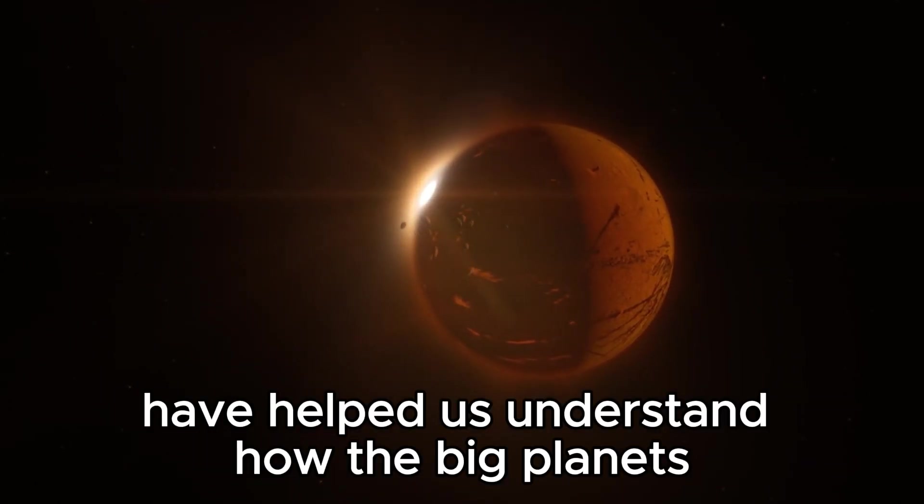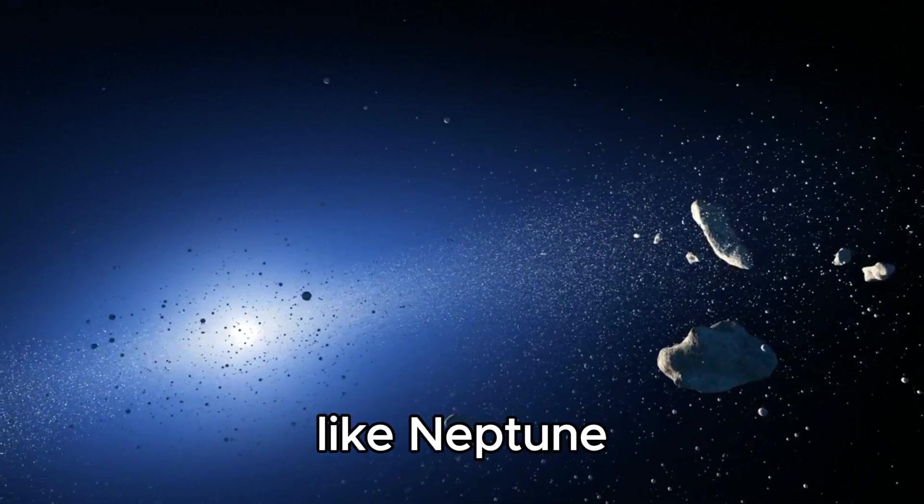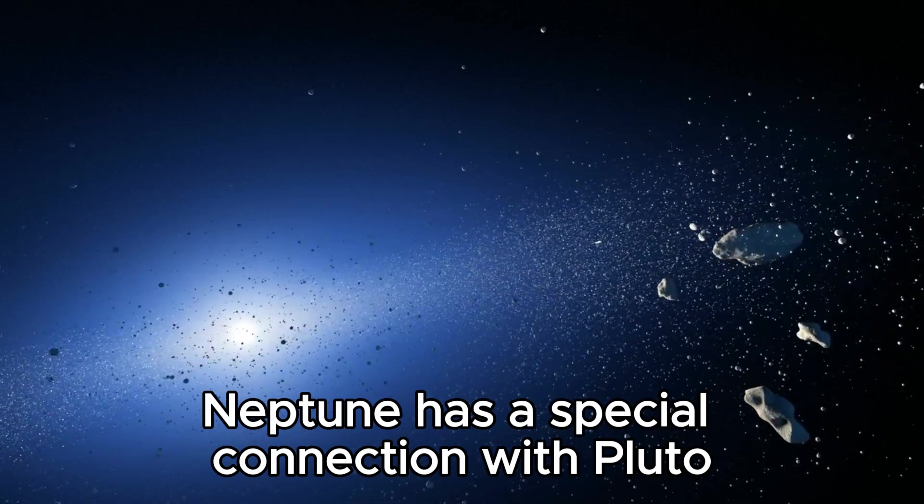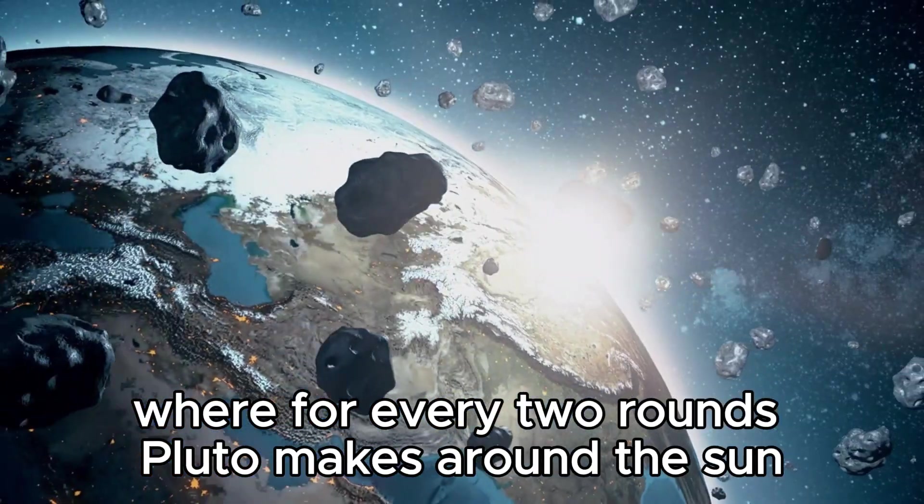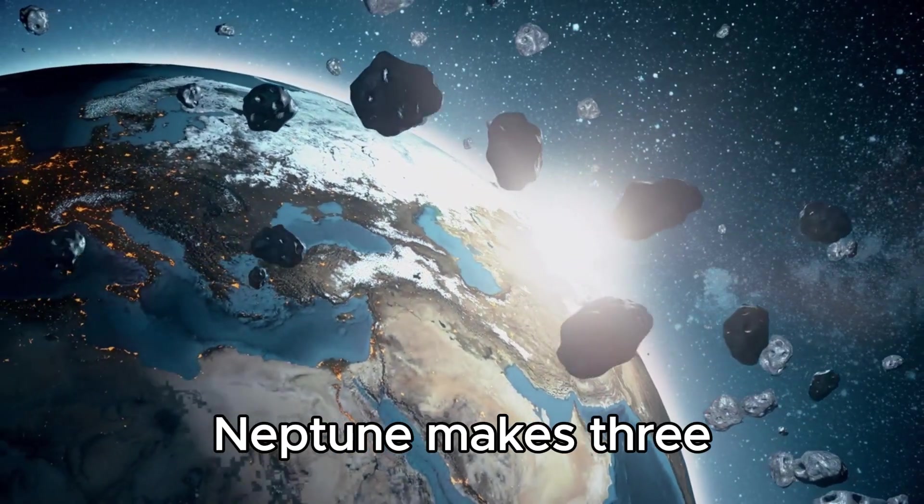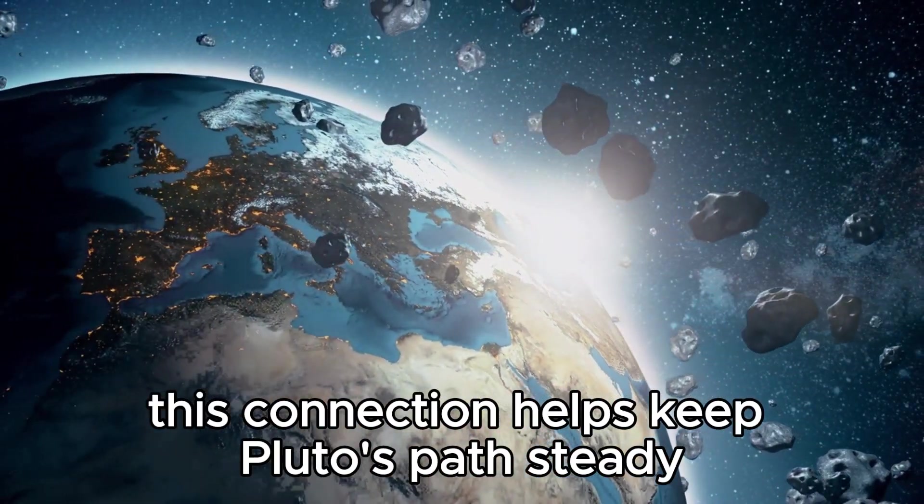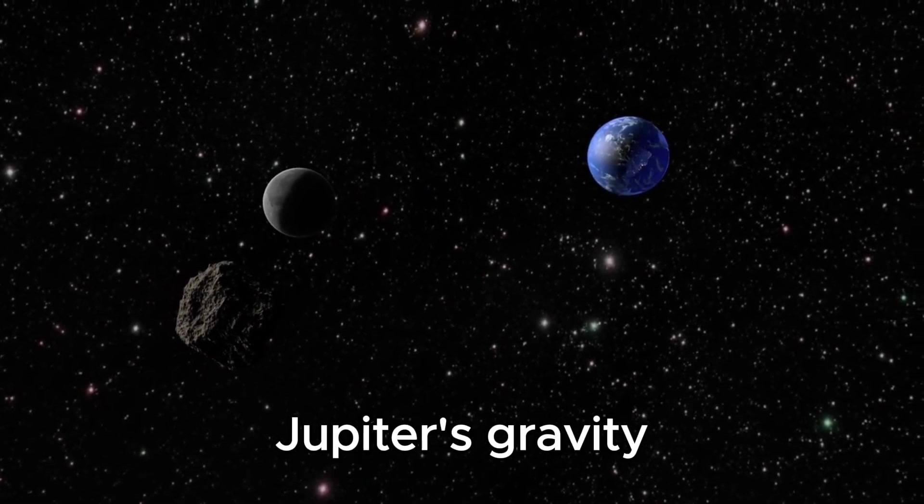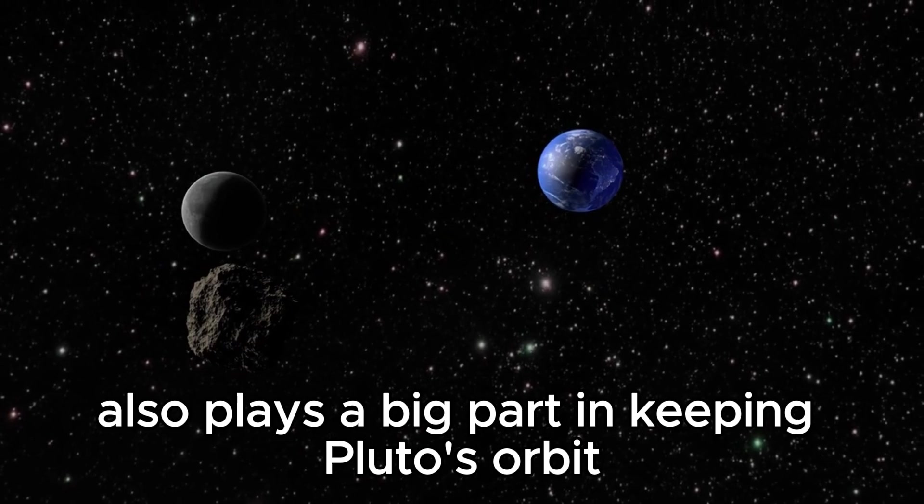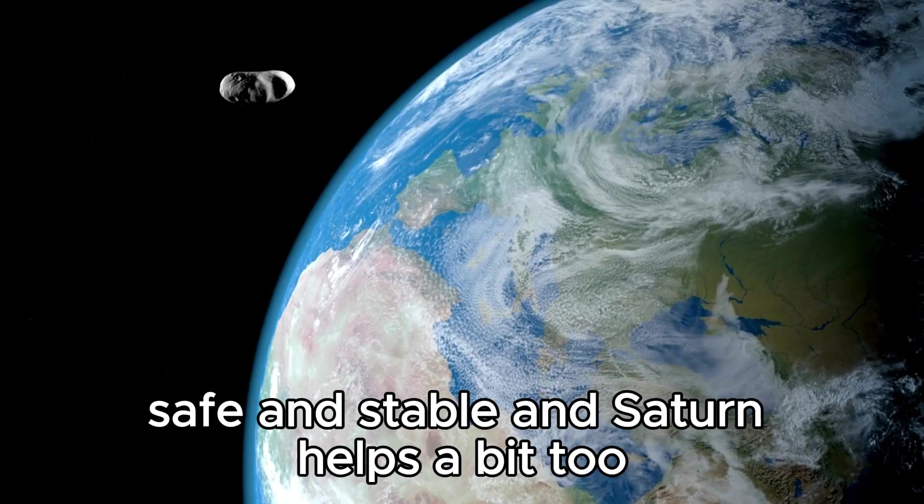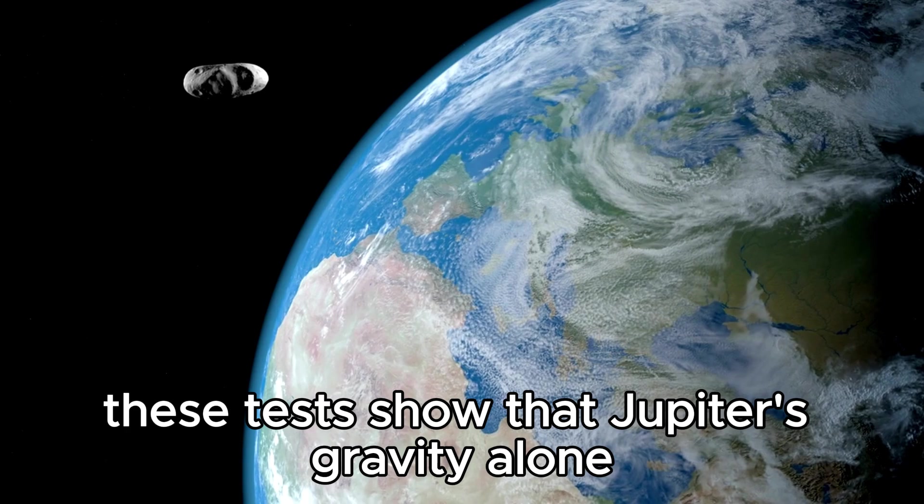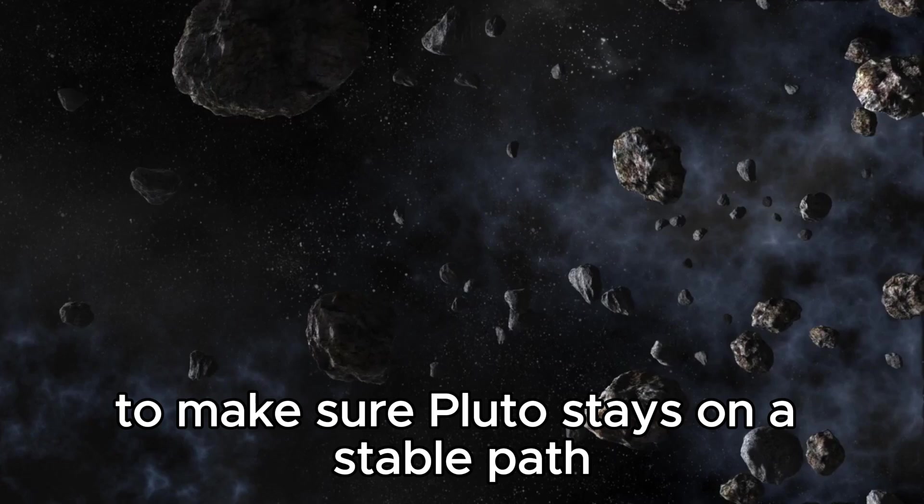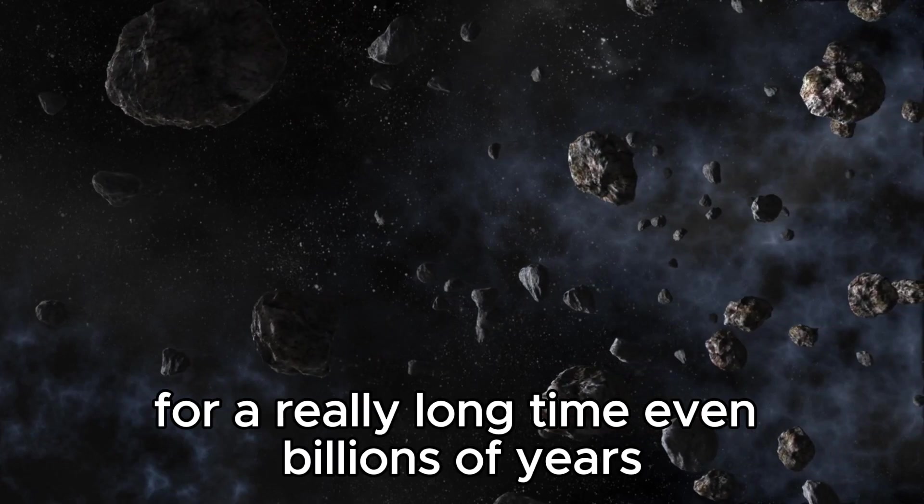Recent computer tests have helped us understand how the big planets like Neptune, Jupiter, and Saturn affect Pluto's path around the Sun. Neptune has a special connection with Pluto, where for every two rounds Pluto makes around the Sun, Neptune makes three. This connection helps keep Pluto's path steady. But Neptune isn't the only one helping. Jupiter's gravity also plays a big part in keeping Pluto's orbit safe and stable, and Saturn helps a bit too. These tests show that Jupiter's gravity alone is strong enough to make sure Pluto stays on a stable path for a really long time, even billions of years.